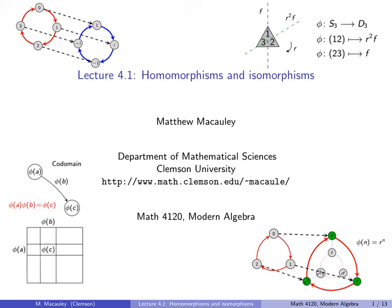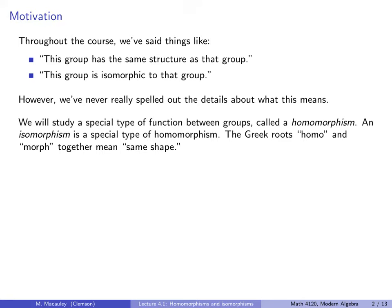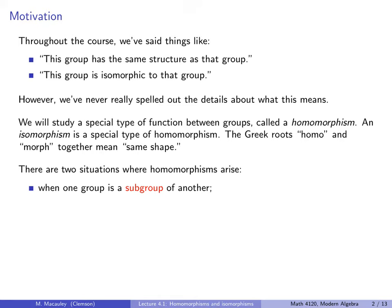Welcome to lecture 4.1, Homomorphisms and Isomorphisms. To motivate this important topic, you've probably noticed that throughout the course we've said things like 'this group has the same structure as that group' or 'this group is isomorphic to that group.' However, we've never really spelled out the details about what this means. In this lecture, we will introduce a special type of function between groups called a homomorphism. An isomorphism is a special type of homomorphism. The Greek roots homo and morph together mean 'same shape.'